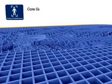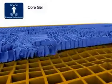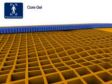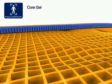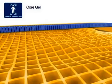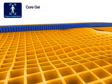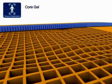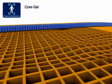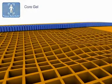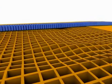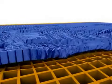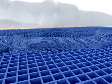CoreGel is designed to redistribute pressure in the sacral region where the highest percentage of pressure ulcers occur. The CoreGel layer redistributes pressure by buckling and absorbing the patient's weight, allowing immersion and envelopment to take place.